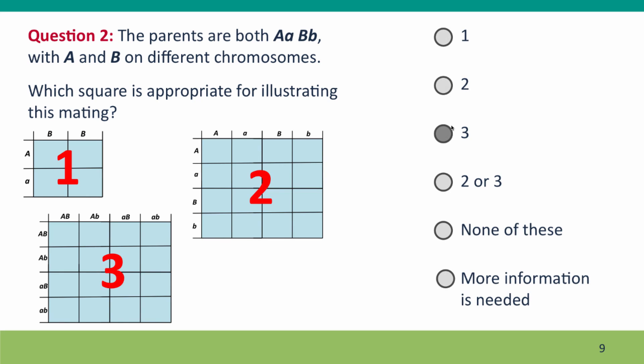And the answer is only three is appropriate because it's got the four genotypes of two genes with both the A and the B alleles present in each gamete.